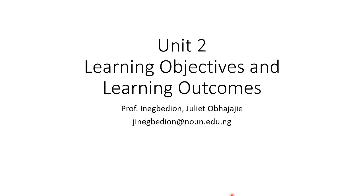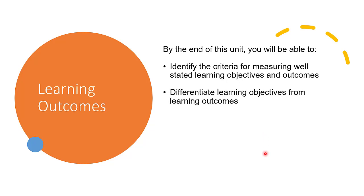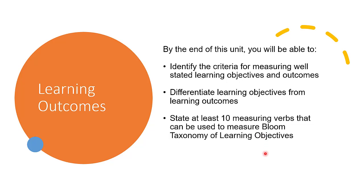Welcome to Unit 2. In Unit 2, we're going to be looking at learning objectives and learning outcomes. I am Professor Inegmedion Juliet Ovadjaje. By the end of this unit, you will be able to identify the criteria for measuring well-stated learning objectives and outcomes. You'll be able to differentiate learning outcomes from learning objectives. You'll be able to state at least 10 measurable verbs that can be used to measure Bloom's Taxonomy of learning objectives.